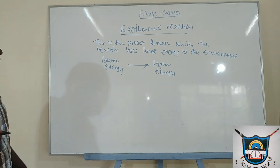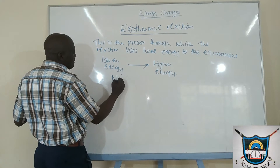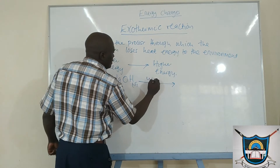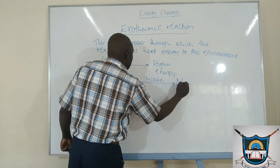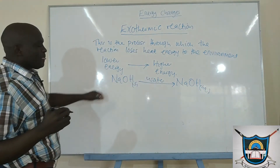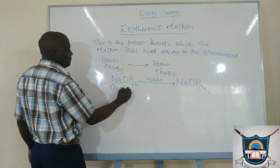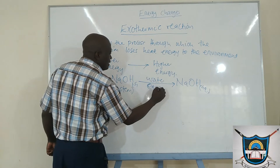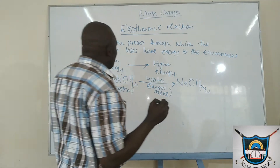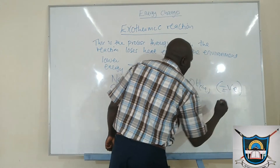Examples of exothermic reactions involve dissolving sodium hydroxide in water. So in this reaction, the system is our system, and water is the environment, which is able to absorb heat energy from the environment. So it will carry a negative sign.